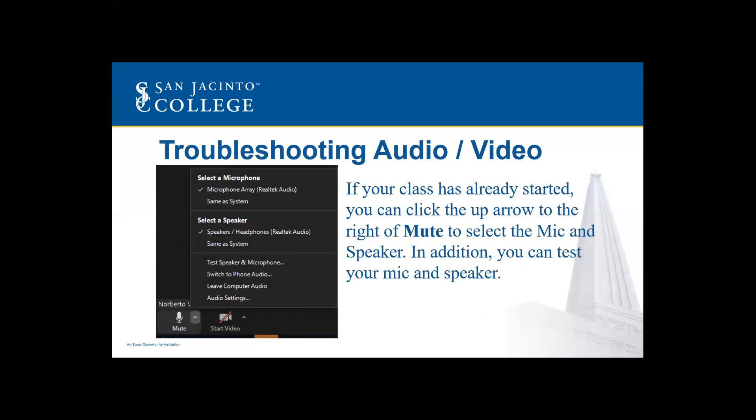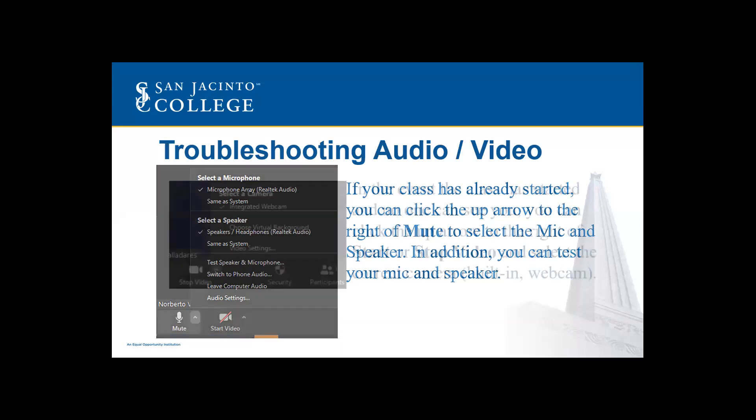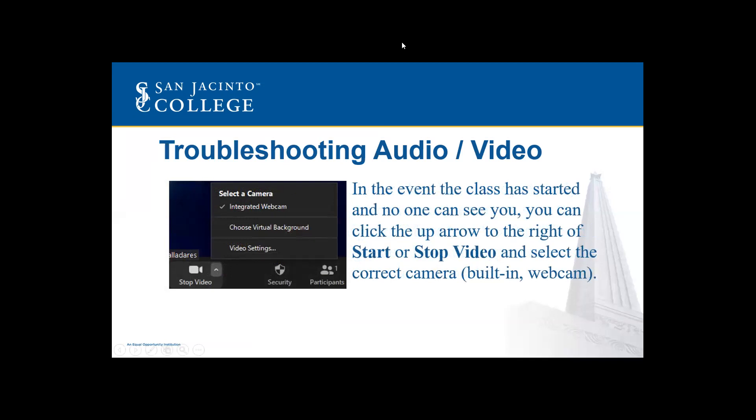If you don't have time to test beforehand and you're already in class running into problems, you can still troubleshoot while in class. For example, if your instructor calls on you and you've unmuted but the instructor still cannot hear you, click the up arrow to the right of the mute button to make sure you've selected the correct mic. You can also go into settings to select the correct speaker, and the up arrow to the right of stop video will allow you to select the correct webcam for your laptop.